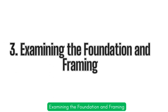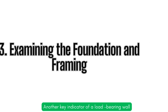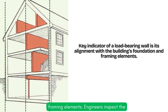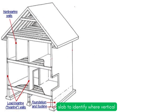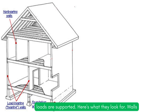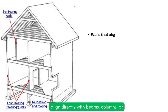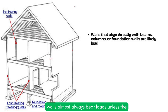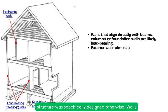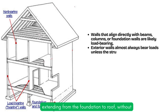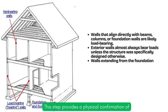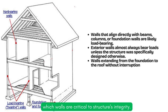Examining the foundation and framing: another key indicator of a load-bearing wall is its alignment with the building's foundation and framing elements. Engineers inspect the basement, crawl space, or foundation slab to identify where vertical loads are supported. Walls that align directly with beams, columns, or foundation walls are likely load-bearing. Exterior walls almost always bear loads unless the structure was specifically designed otherwise. Walls extending from the foundation to the roof without interruption usually serve a structural purpose. This step provides a physical confirmation of which walls are critical to the structure's integrity.